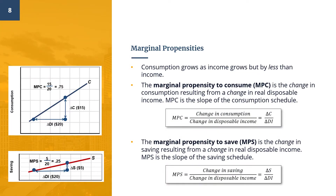Now let's move on to additional characteristics of the consumption and saving schedules. John Maynard Keynes argued that as income grows, so does consumption, but by less than income — this is why the consumption line is flatter than the 45-degree line. The Marginal Propensity to Consume, or MPC, is the proportion of any change in income that is consumed. It is the extra consumption resulting from a given change in real disposable income, and visually the MPC is the slope of the consumption schedule.